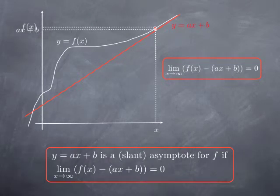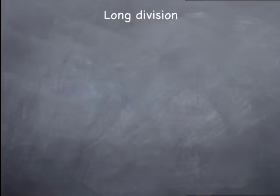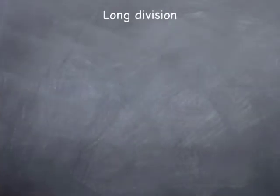A line of equation y equals ax plus b is an asymptote for f if the limit at positive or negative infinity of the difference between f and ax plus b is 0. The case we're going to focus on is where f of x is a rational function — in other words, a quotient of two polynomials. In this case, finding the equation of the slant asymptote is going to be about long division.